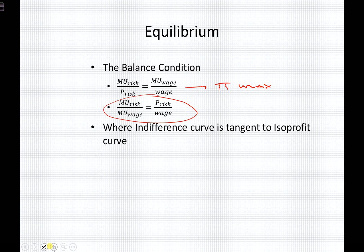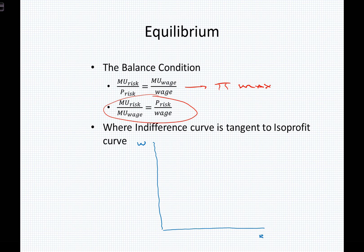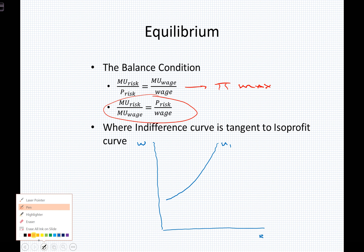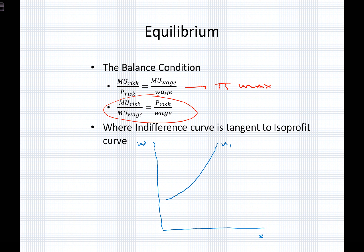We've already considered two other elements here. We've thought about this in wage and benefit space, and now we're going to think about this in wage and risk space again. We know that the marginal utility of risk divided by the marginal utility of wage is the worker's indifference curve, and we know that it is upward sloping and convex. Similarly, in wage and risk space, the isoprofit curve for the firm is going to be upward sloping and concave.